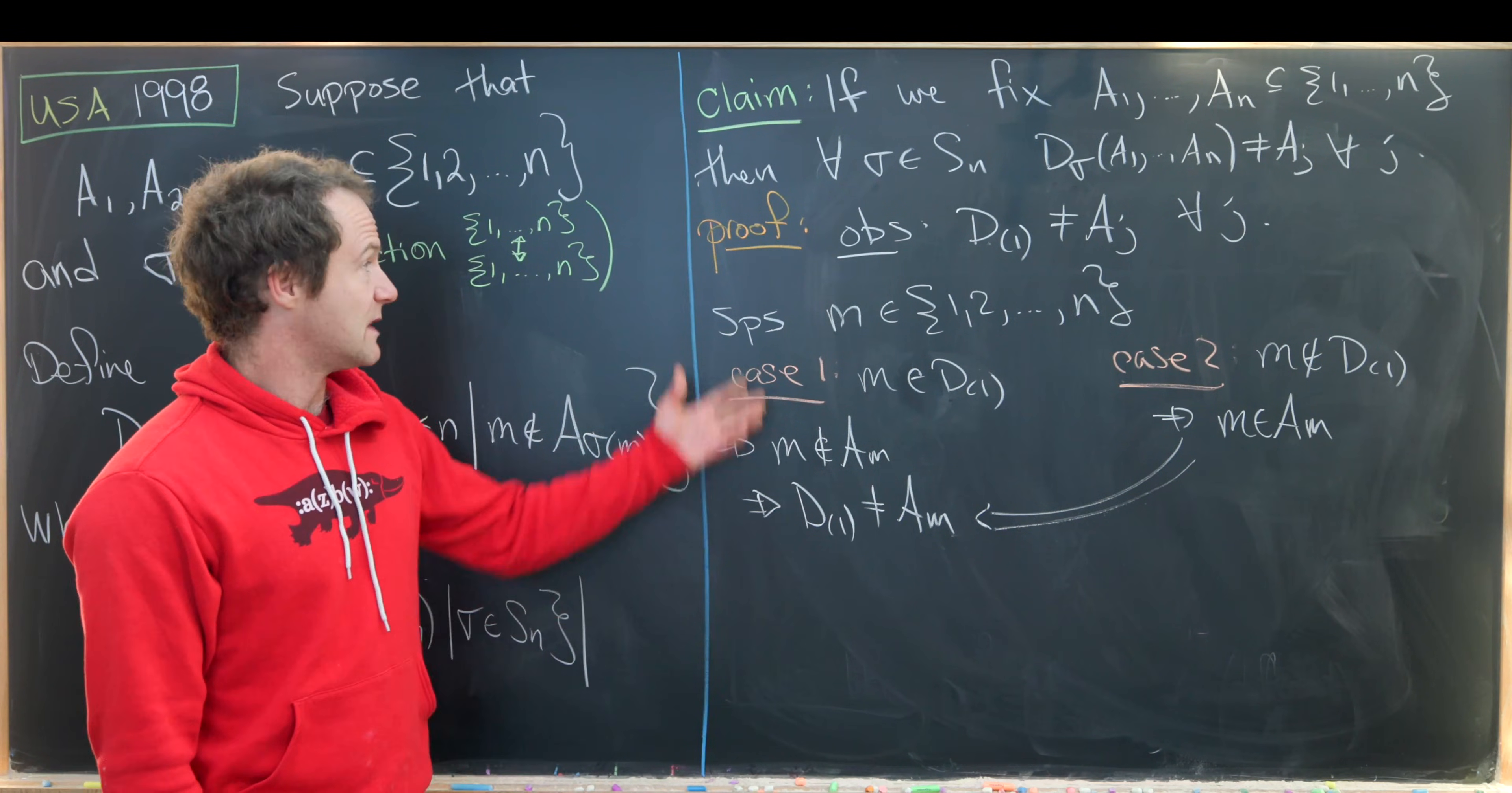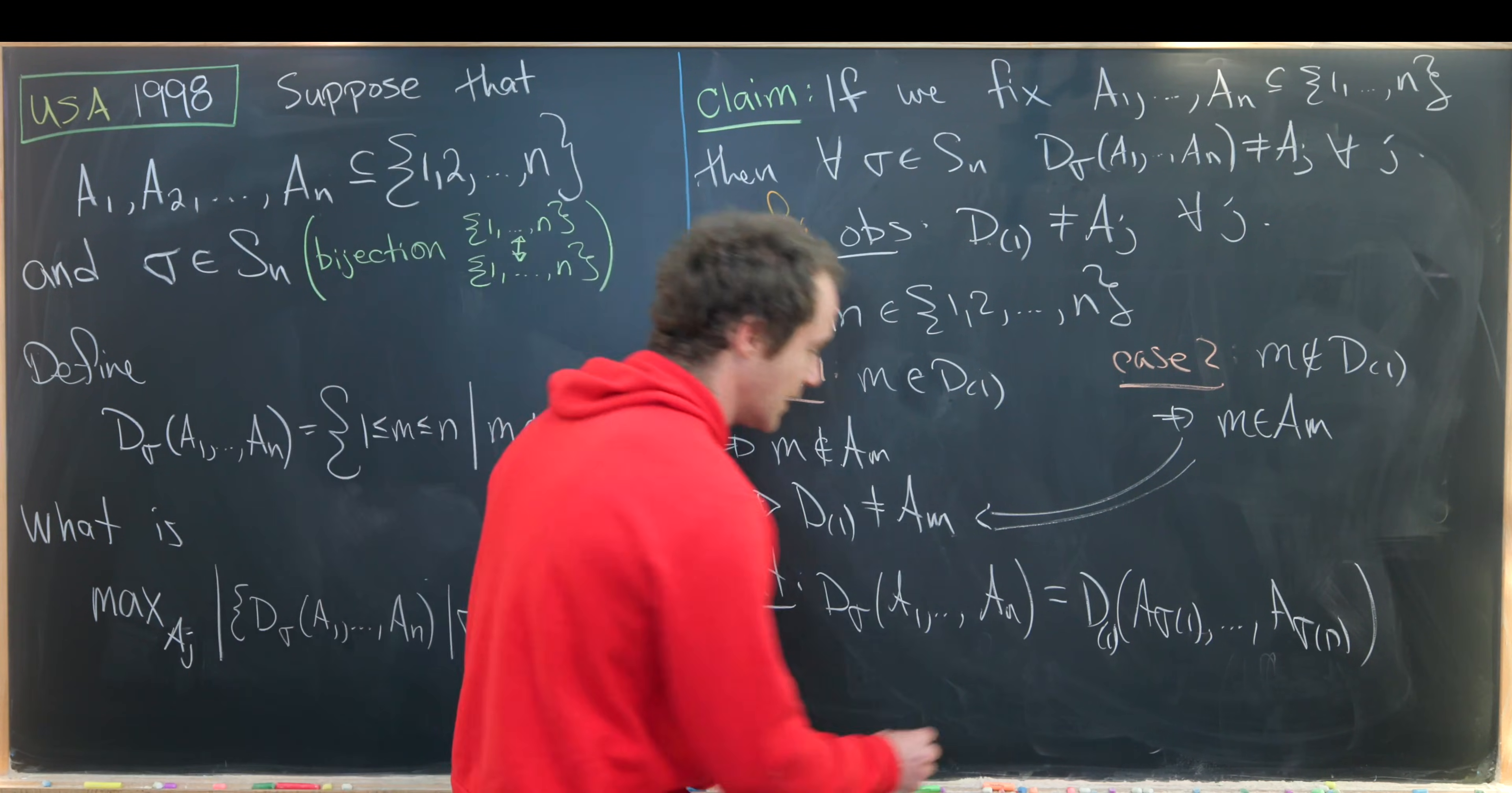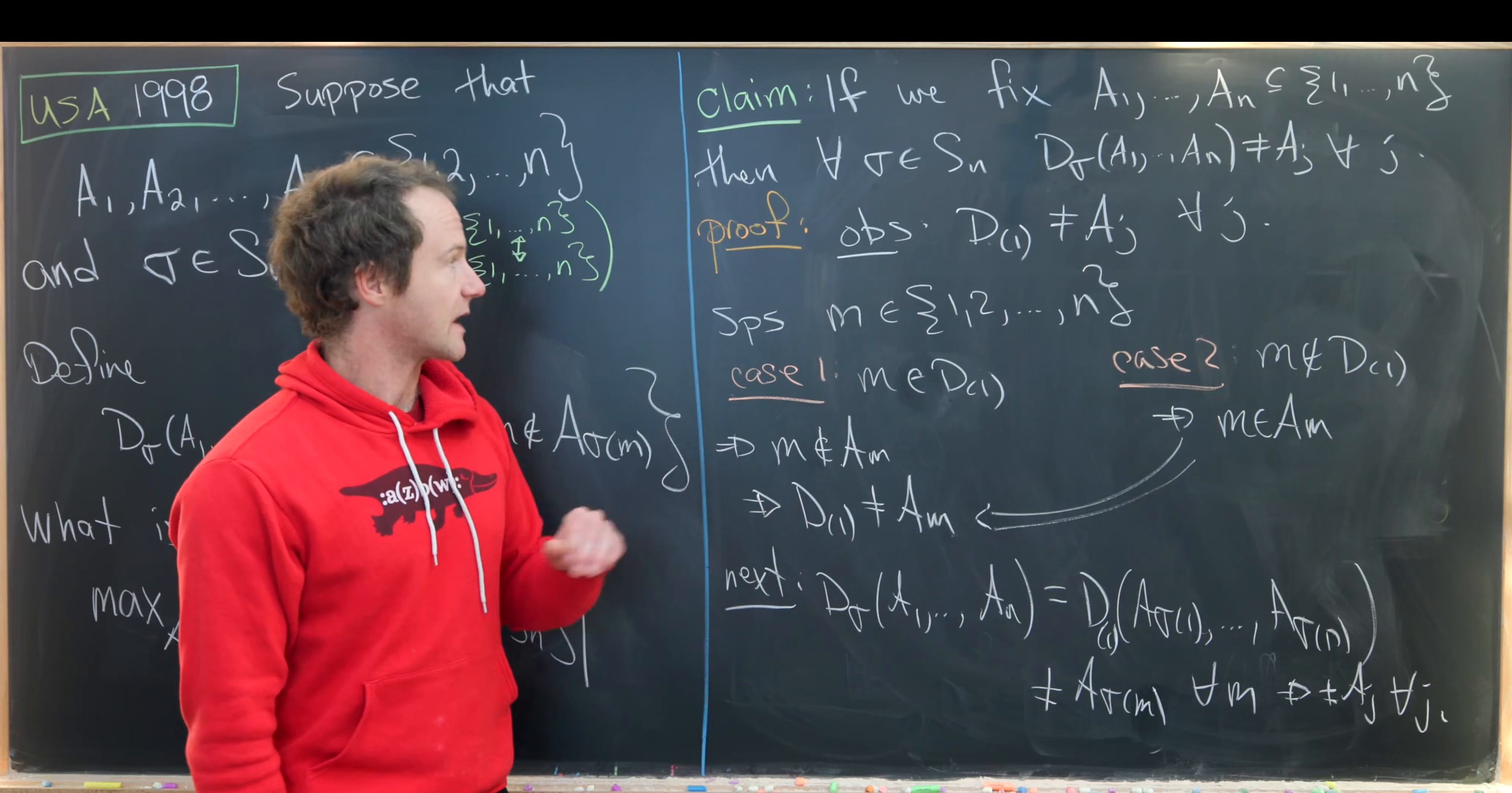So now let's maybe use this observation to prove the finality of this claim and we can do that with the following fairly obvious equality and that is that D_σ(A1 up to An) is the same thing as D_identity(A_σ(1) all the way up to A_σ(n)). That's just again by this definition over here. But we know that that is not equal to A sub σ(m) for all m by this first observation. But then since σ is a bijection that means that this is not equal to Aj for all j. Because as you range m over all numbers between one and n you will range σ(m) over all of those numbers as well. So that finishes the proof of this claim.